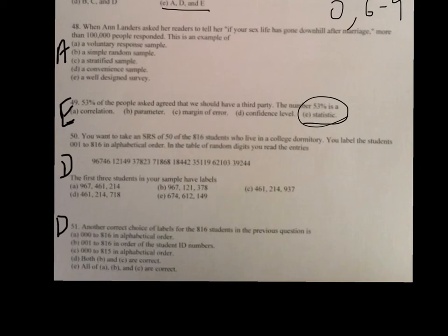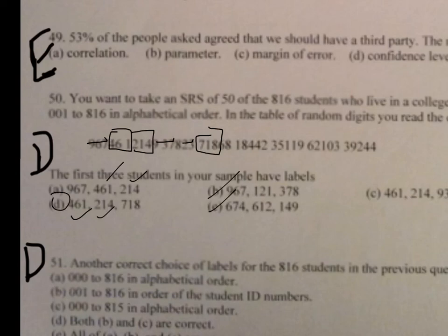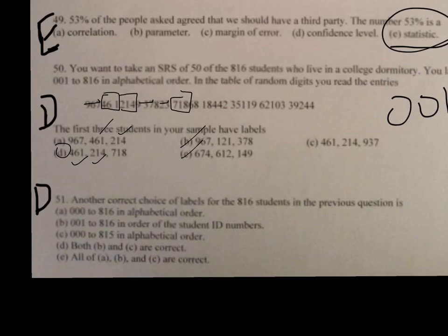On number 50, you're doing three-digit numbers, so the first three digits in the sample. So if you're doing between 001 to 816, and since we are looking for the first three numbers, it's not 967. 461 is our first number. If you notice, it's not these numbers right here. And then 214, so 461, 214. So these numbers. And then the next one, it's not 937. It's not 823, but it will be 718. And that's why D is the correct answer. Now, finally, on the last one, another correct choice of labels for 816. This was a little tricky. Yes, I've told you to put them in order, but also you can put them in order by student ID numbers. But yet it still is from 001 to 816.